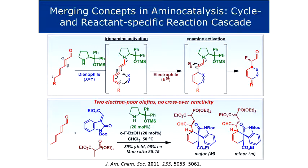No crossover is observed — the oxindole olefin goes into the trinamine cycle specifically and the other goes into the enamine cycle specifically. The stereochemical control at one center is not perfect, around 85:15, and at one position the acidity of the proton prevents full control. Nevertheless, it demonstrates the principle that you have no crossover of reactivity when adding two similar electron-poor olefins into the reaction.